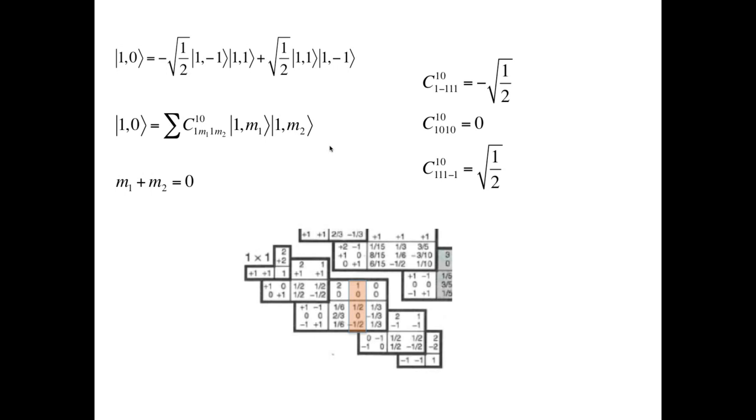Our results are in agreement with the coefficients given in any Clebsch-Gordan table. For J1 equal to 1 and J2 equals 1, and for J equal to 1 and M equal to 0, the coefficients corresponding to the respective values of M1 and M2 are the same as the values that we find. Thank you.